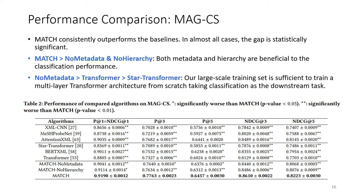Here is the performance on MAG-CS. We can see that, first, MATCH consistently outperforms the baselines. In almost all cases, the gap is statistically significant. Second, the full MATCH model outperforms the two ablation versions, indicating that both metadata and hierarchy are beneficial to the classification performance.